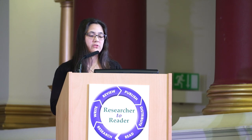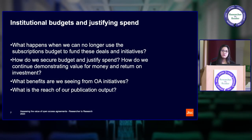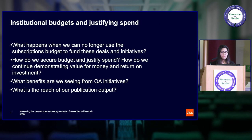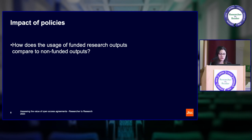There are two general approaches. First, they want to look at what are the benefits to our institution — how much usage are we seeing from open access content, either that we paid for or haven't contributed to, and what benefits are we getting back from open access? The other approach is to look at what we've been publishing: can we demonstrate that we've increased the reach of our research by making it open access? We're also looking at citations and comparing citations of funded and non-funded research outputs, with a natural extension to look at full-text usage as well.